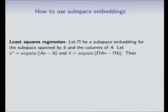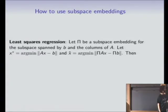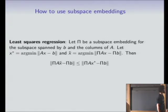Let me show you why a subspace embedding helps for least squares regression. Take pi to be a subspace embedding for the subspace spanned by the columns of A as well as the vector B — it's at most D-plus-1 dimensional. Let x-star be the optimal solution for the original problem, and x-tilde be optimal for the dimensionality-reduced version where I multiply both A and B by pi. Then x-tilde is certainly better for the new problem than x-star.